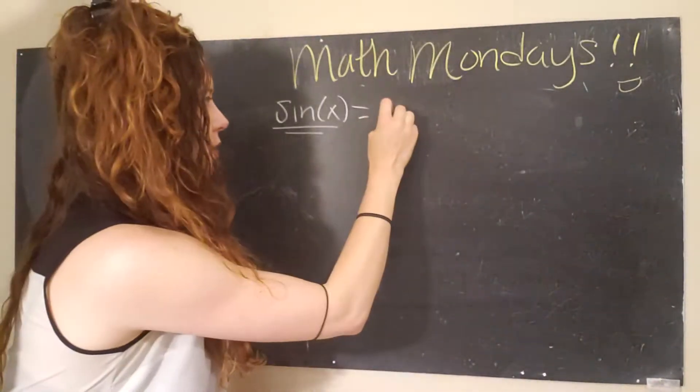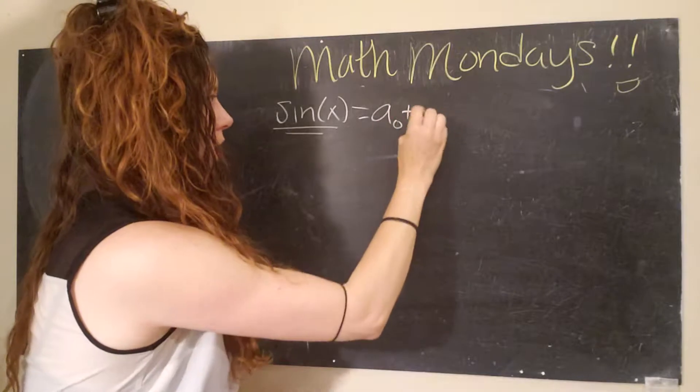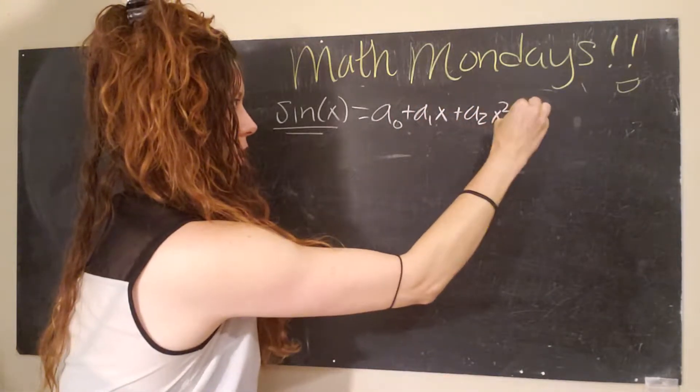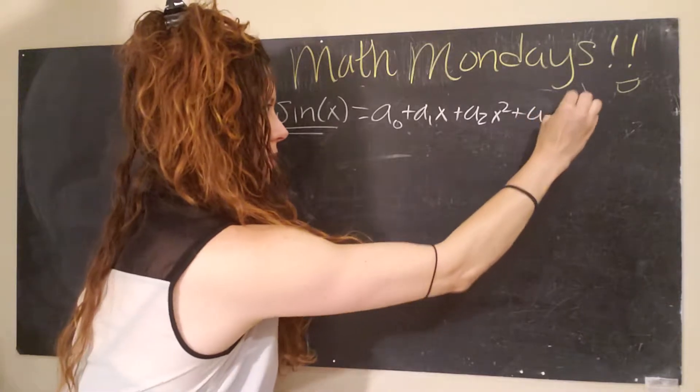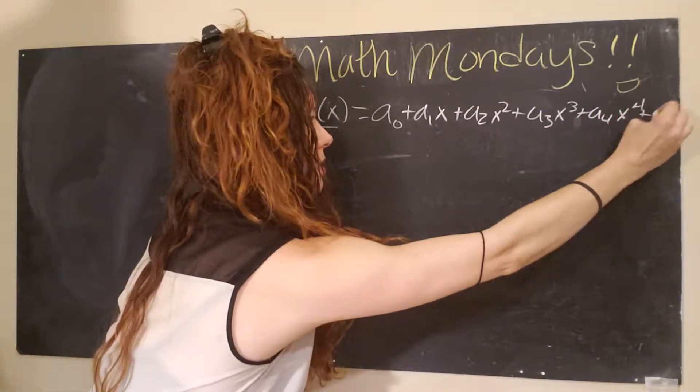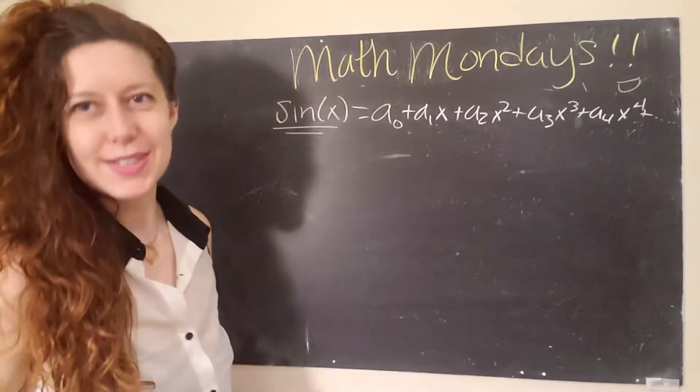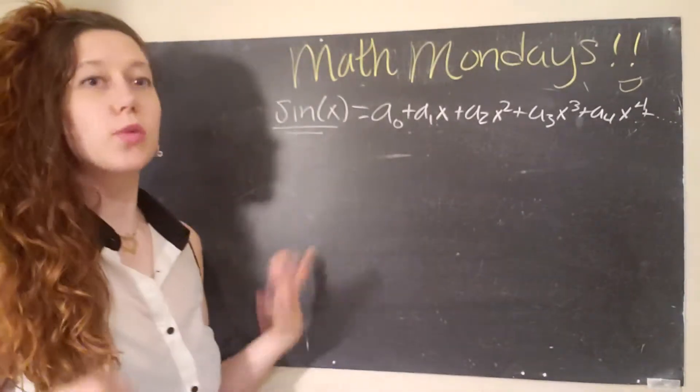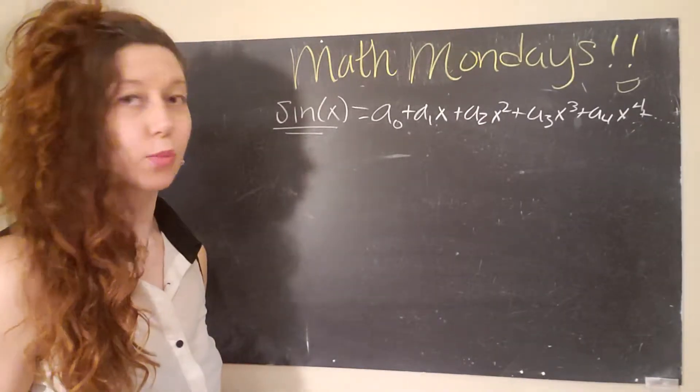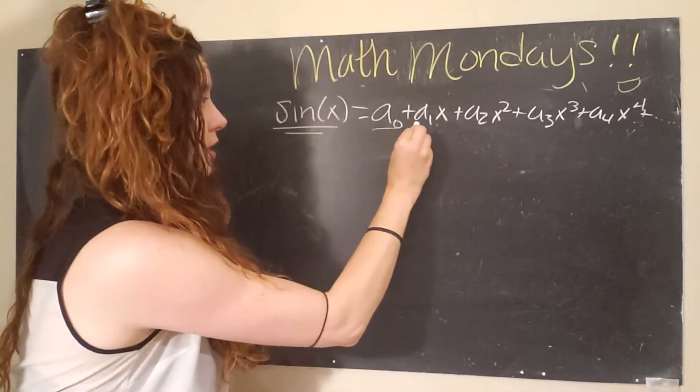So we have a zero plus a one x plus a two x squared plus a three x cubed plus a four x fourth plus dot dot dot etc. Okay, so now, now what? We have this general form, and we have to start solving for these coefficients.